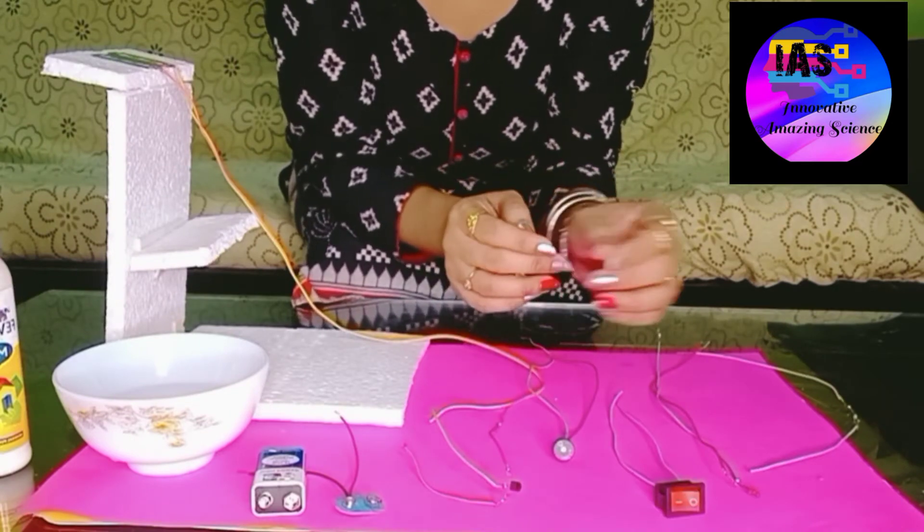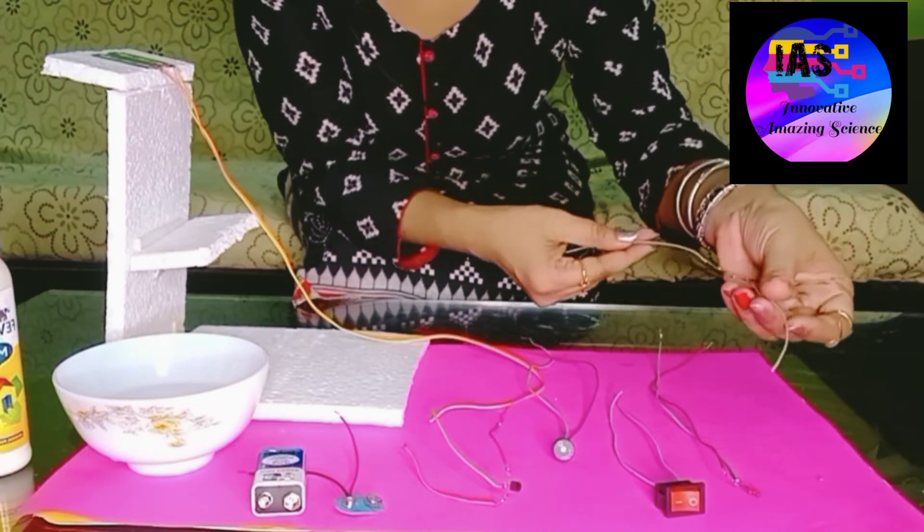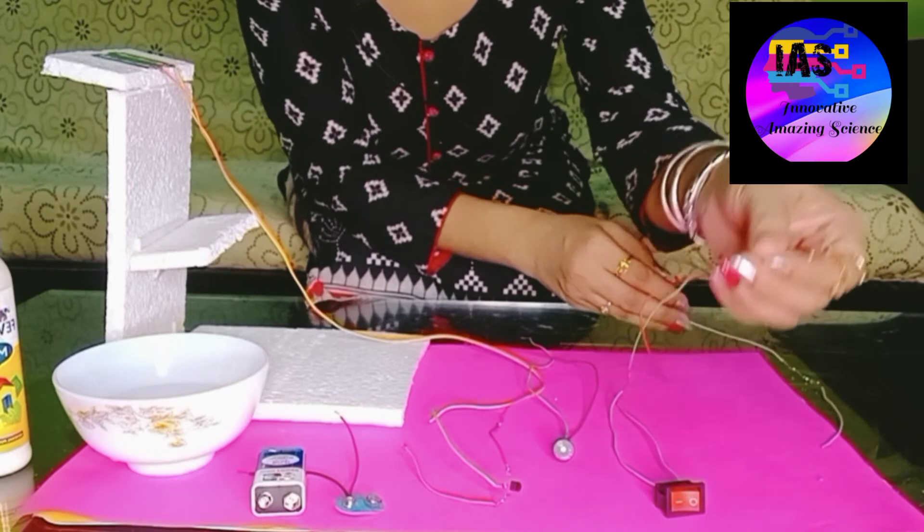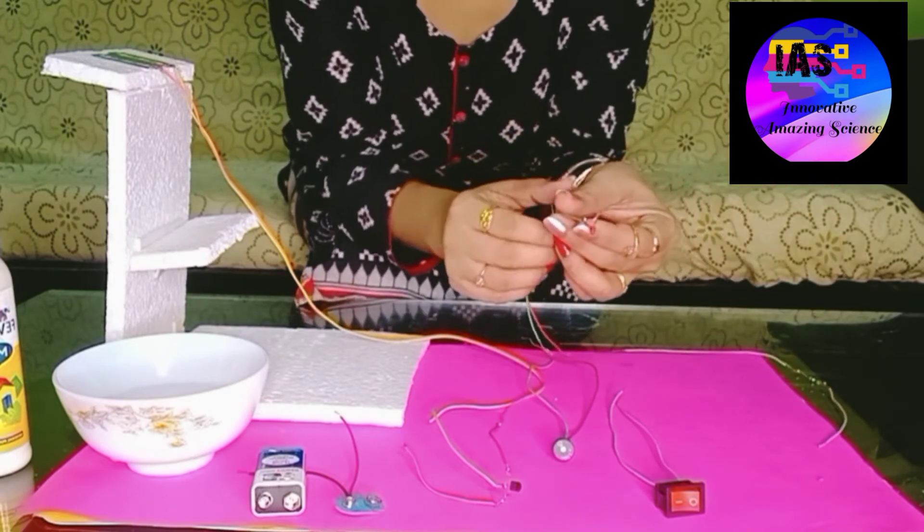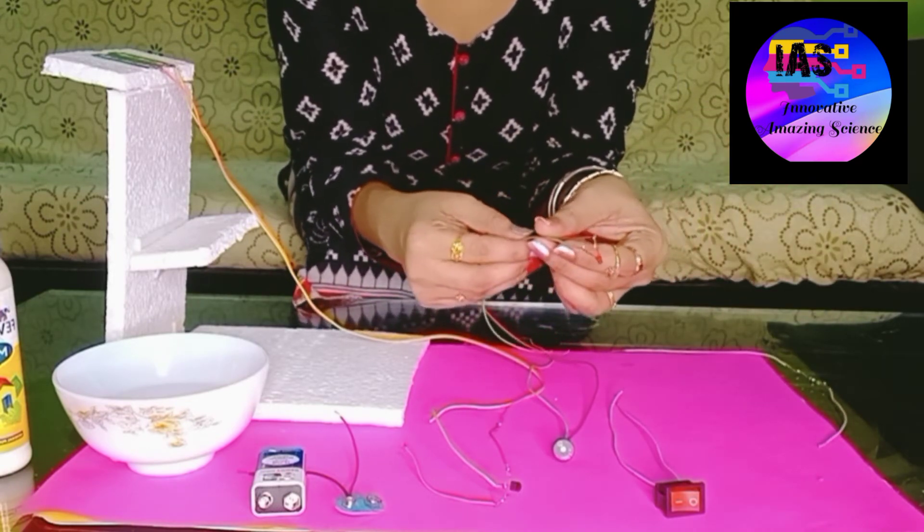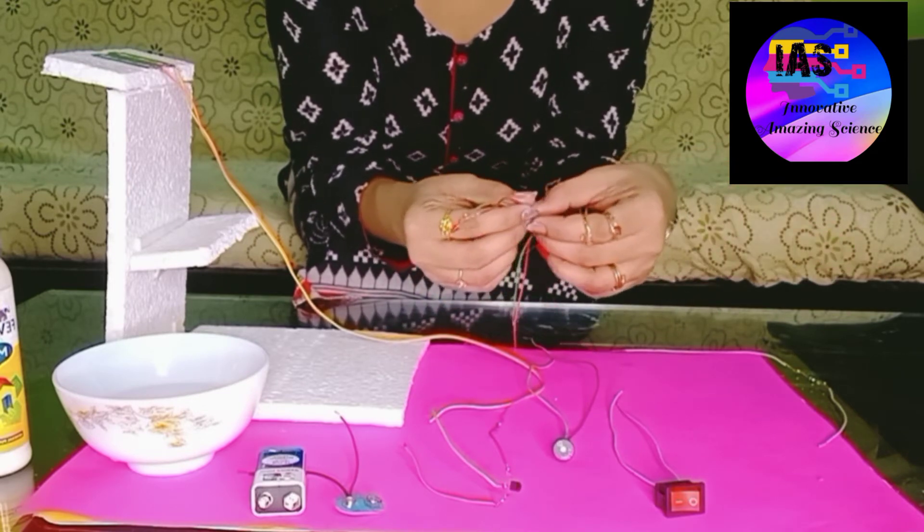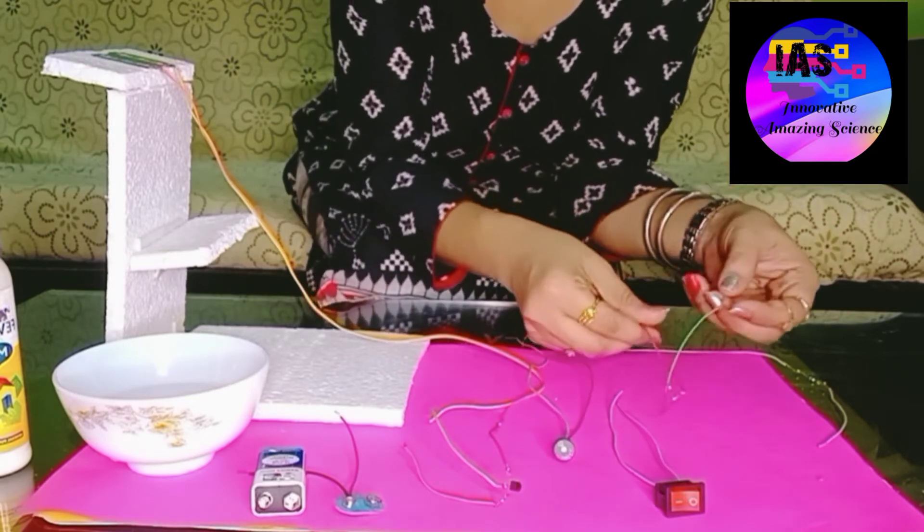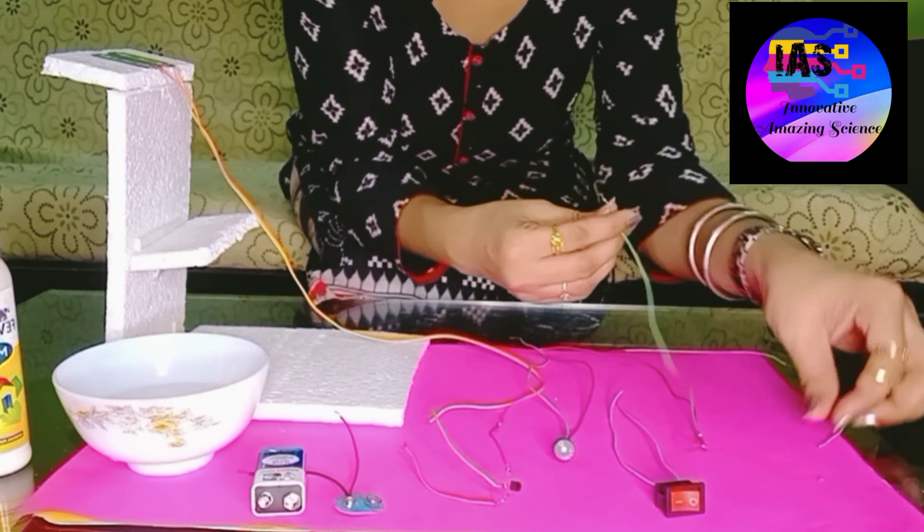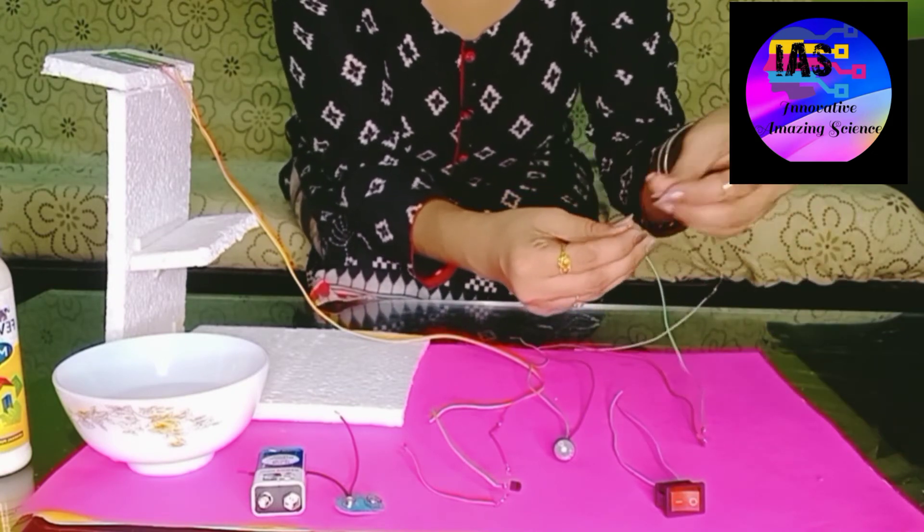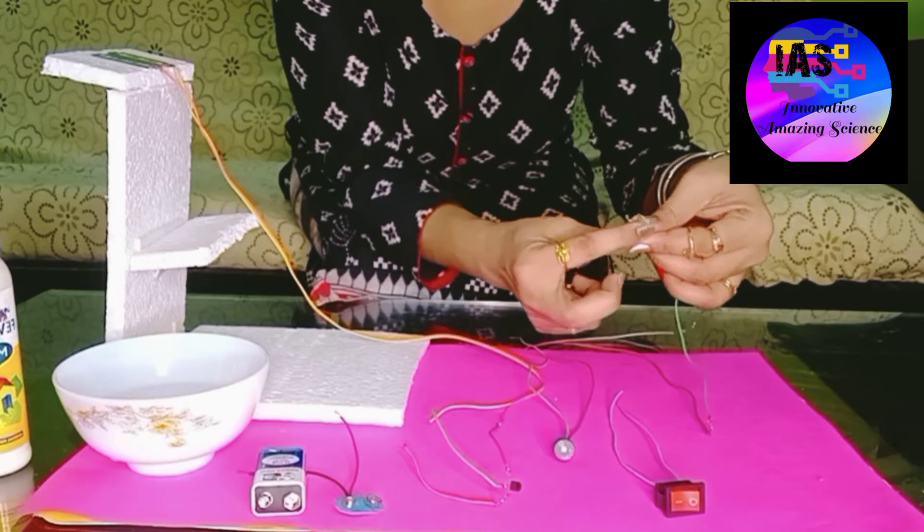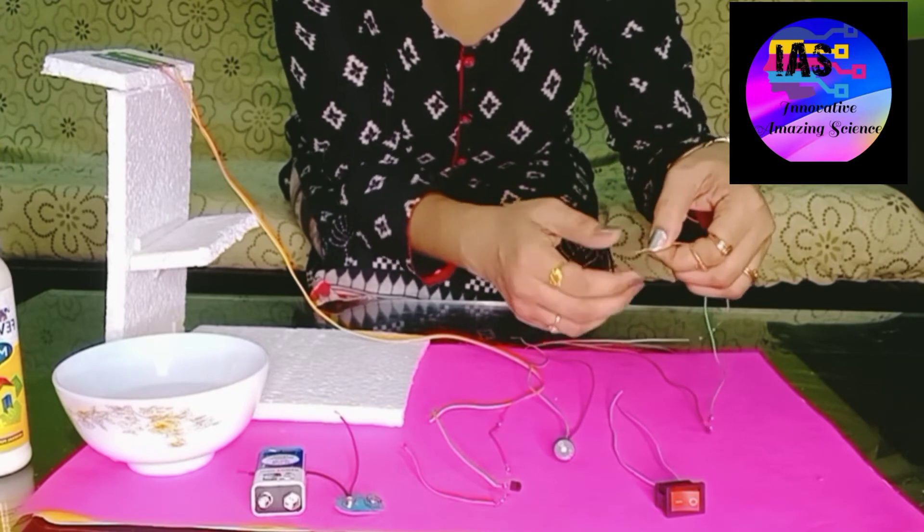My next step is I'm going to take this resistance and this LED. This LED is very delicate, so to protect it, I'm going to fix this resistance. You can see the green wire, which is the negative. One end of the resistance, I'm going to fix it and twist it.